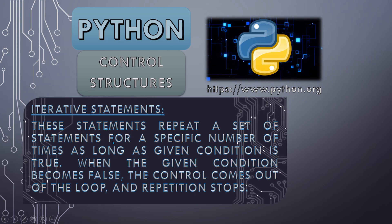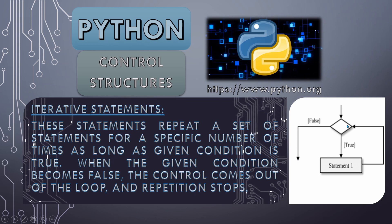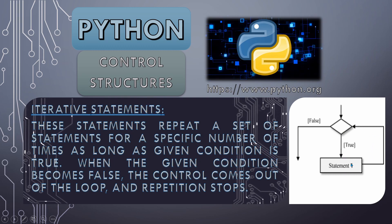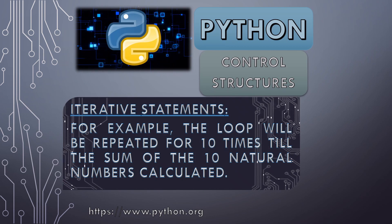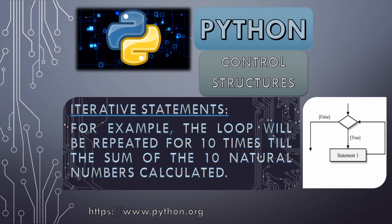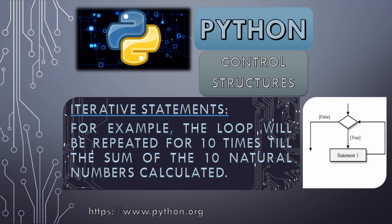In iteration, if the condition is true the execution continues, and when the condition becomes false the control comes out of the loop and repetition stops. For example, a loop repeated ten times to calculate the sum of ten natural numbers — as long as those ten numbers appear the loop keeps executing, and when the task is complete the condition becomes false and we exit the loop.